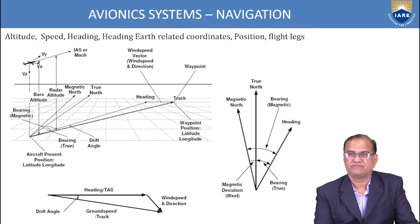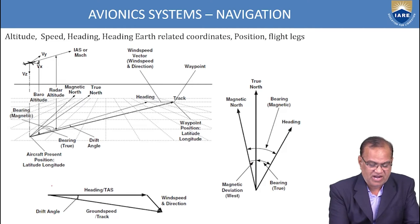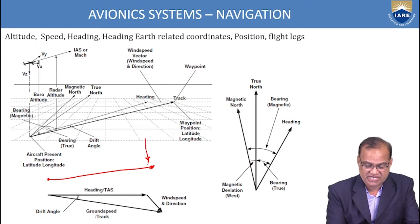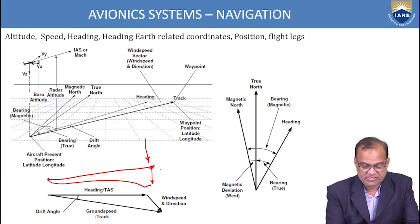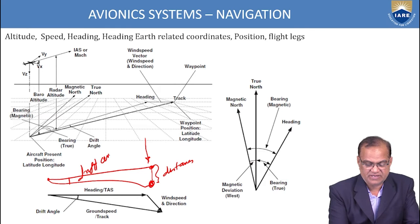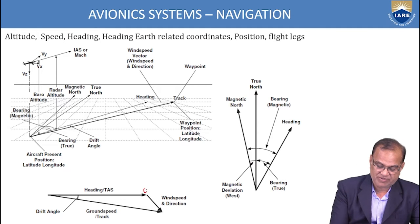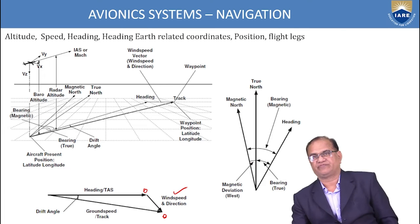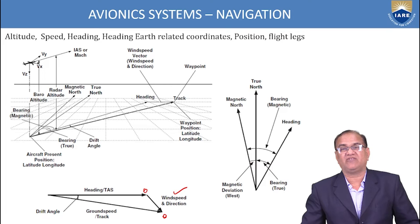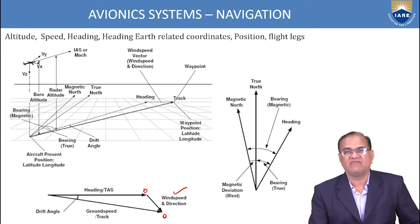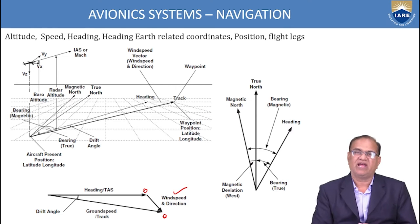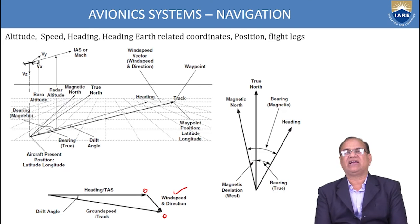Here, magnetic north and true north show how much deviation there is — this gives you the true bearing in the west direction. The drift angle: if the aircraft has to move from point A to point B but the wind is in a certain direction, the aircraft will drift some distance. This is called the drift angle. The direction and speed of the wind are very important — if the wind is very high, the drift angle will be very high. The pilot must correct as per the drift; nowadays computers inform the autopilot and autopilot takes corrective action.